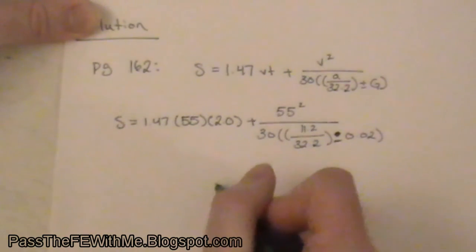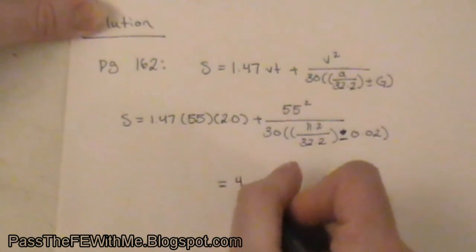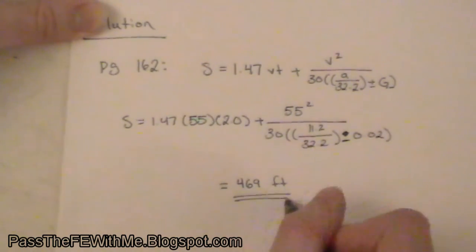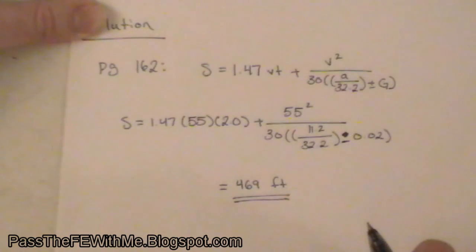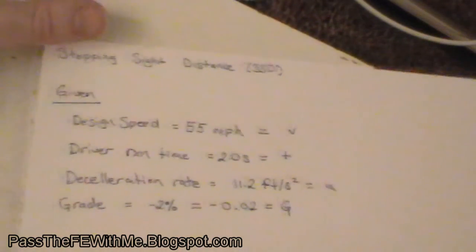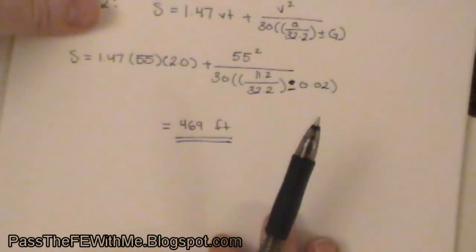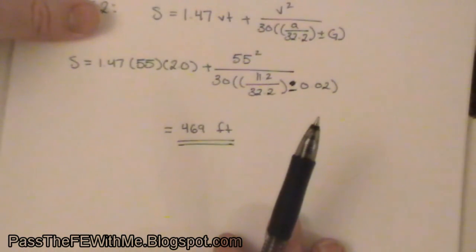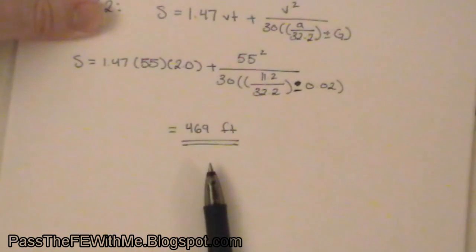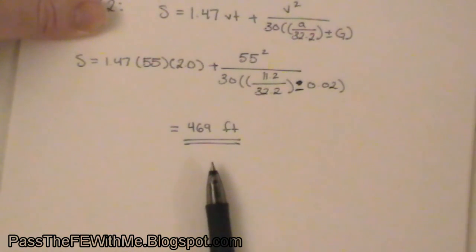So that is the stopping sight distance, and that means that a driver operating at these assumed design parameters would need 469 feet from the time that they saw an obstacle in the road ahead to the time they were actually able to come to a complete stop. So I hope that helps, and stay tuned for more video lessons. Good luck on your exam. Thanks.